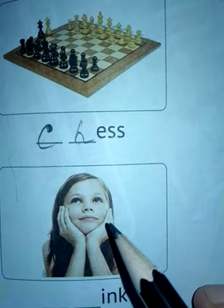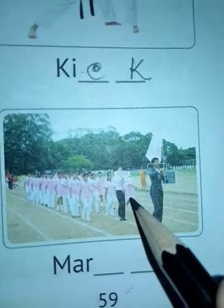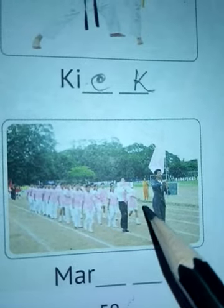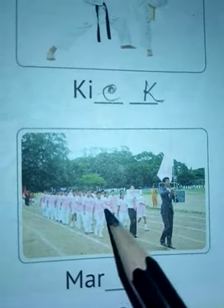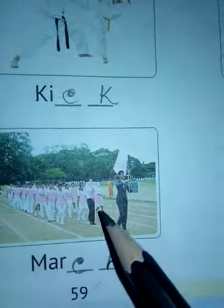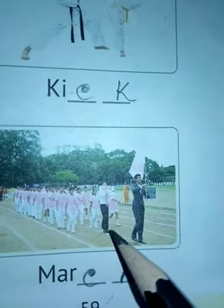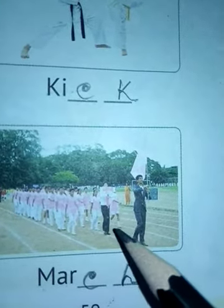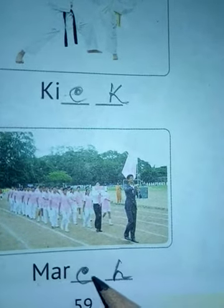Next is a girl who is thinking — something is going on in her mind. In Hindi we say 'soch.' Think spelling: T, H, I, N, K. T and H are consonants. Next is a picture of march — working in a military manner. March spelling: M, A, R, C, H. Some soldiers are marching. C and H are consonants.